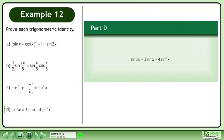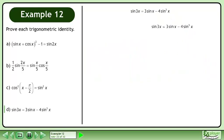In Part D, prove that sin 3x = 3sin x - 4sin³x. Rewrite the statement and draw a line. Write 3x as 2x + x.